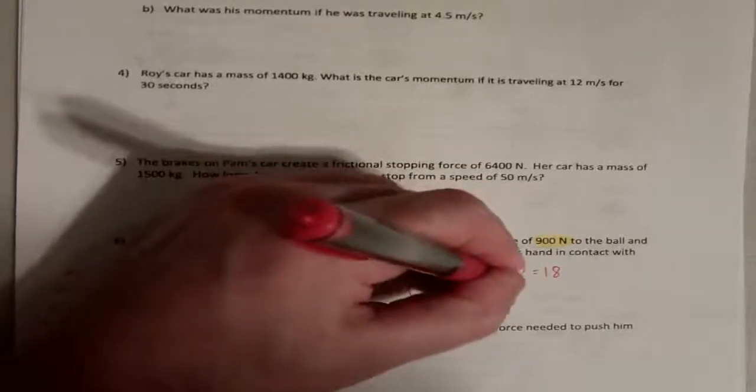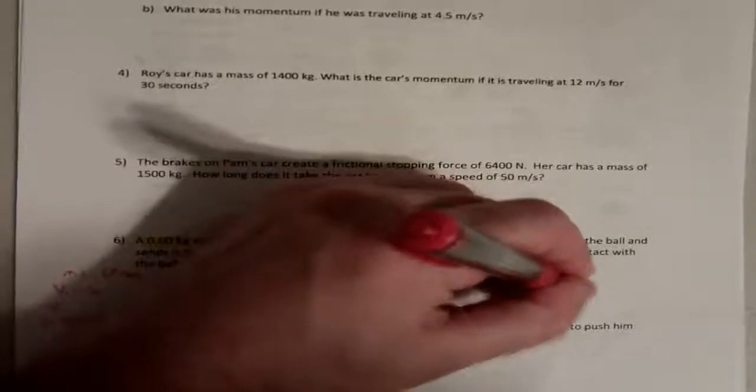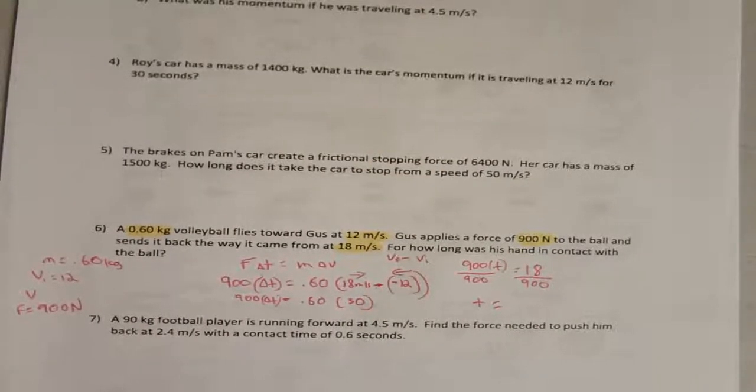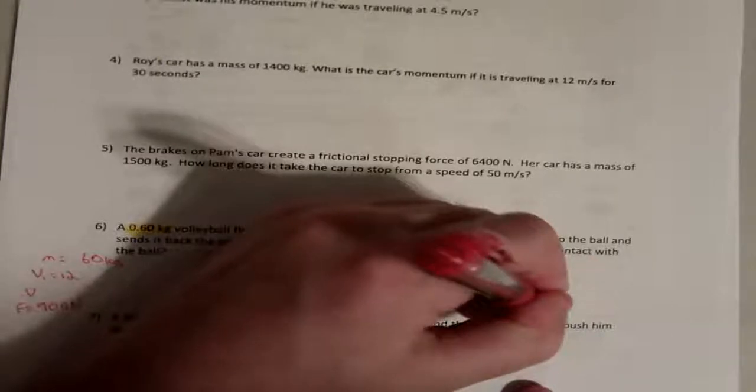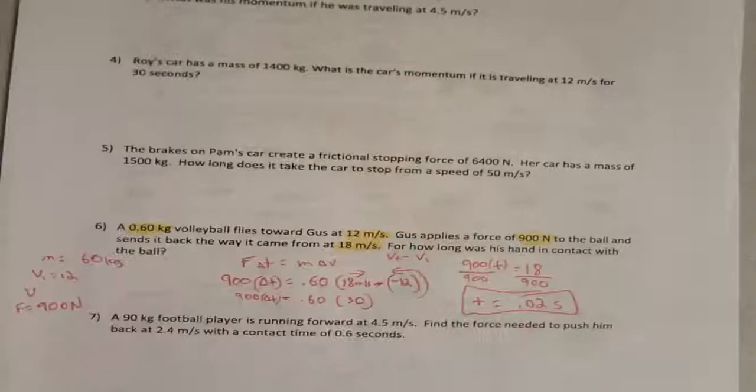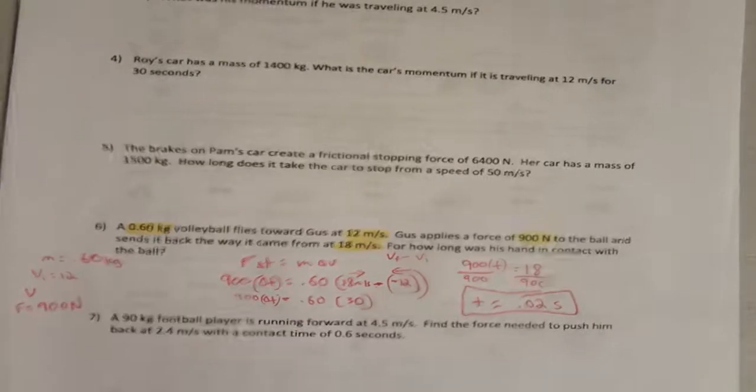So, 0.6 times 30 is 18. So, we have 18 equals 900 times time. Divide that 900. Divide that 900. So, we have time equals, let me do it on a calculator, 0.02 seconds, which makes sense, right? Because if he hits that volleyball, boom, it's real fast, 0.02 seconds.